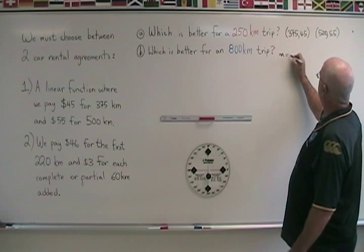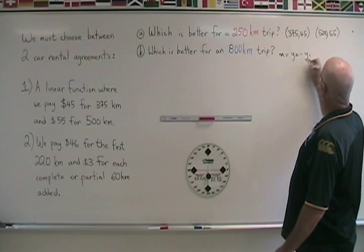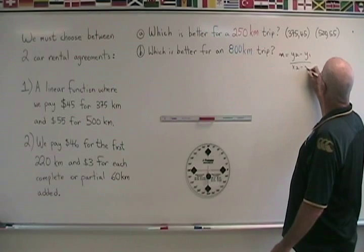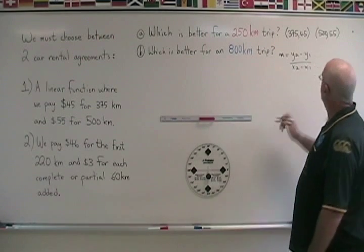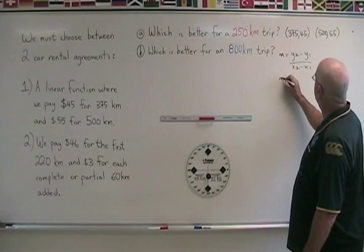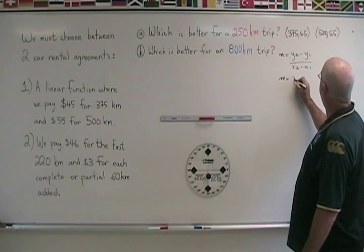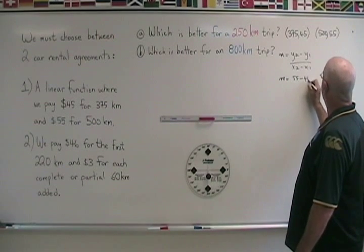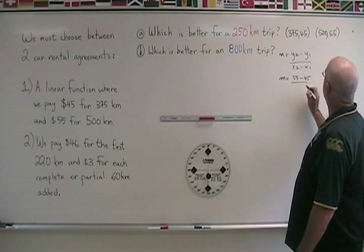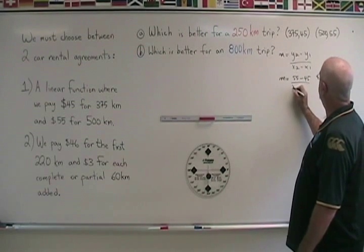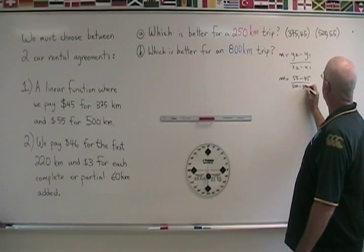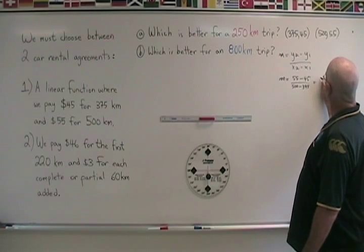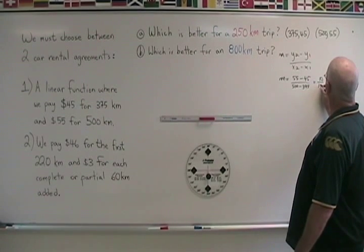Using the slope formula, we get y2 minus y1 is 55 minus 45, and x2 minus x1 is 500 minus 375, which gives us 10 over 125.